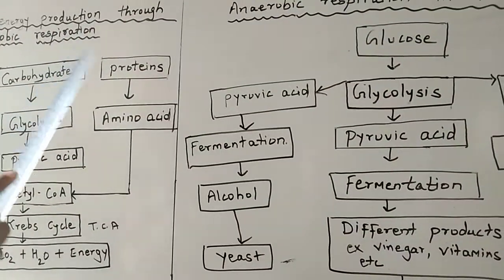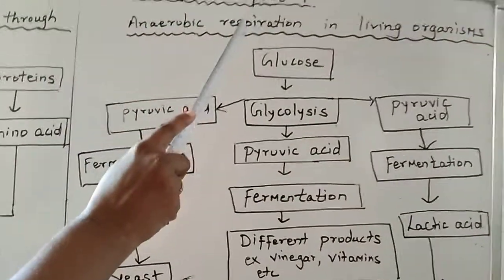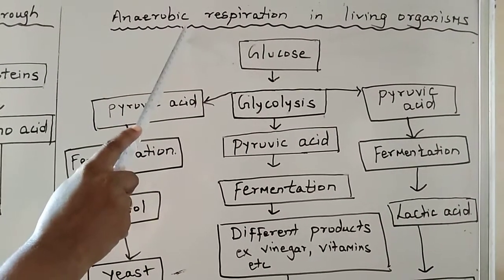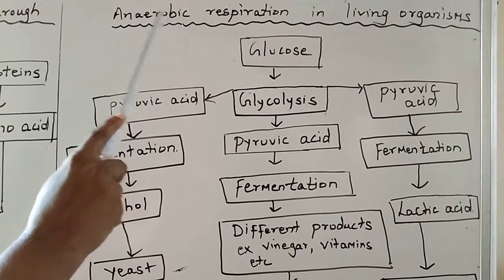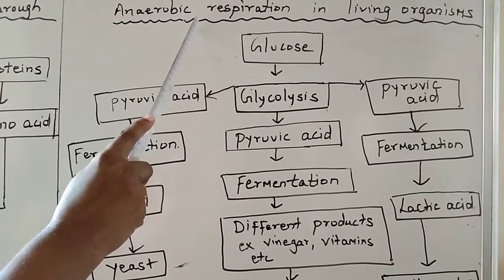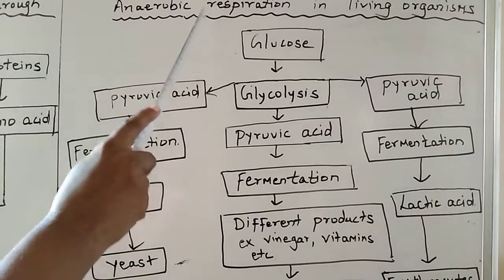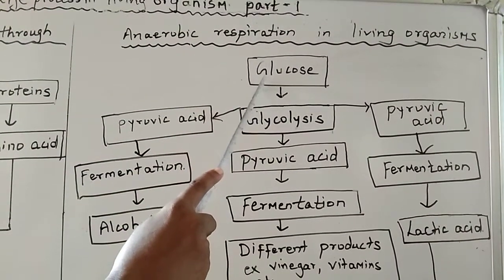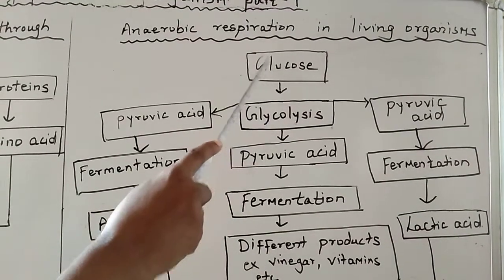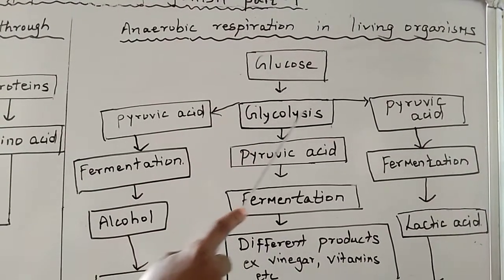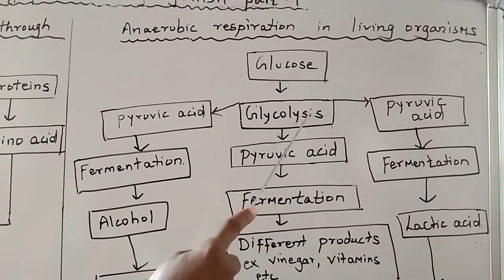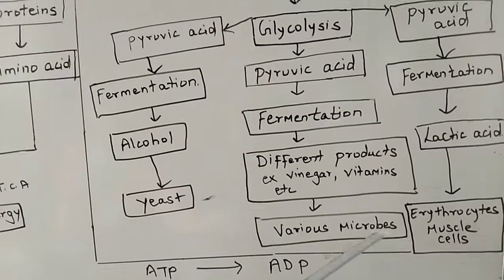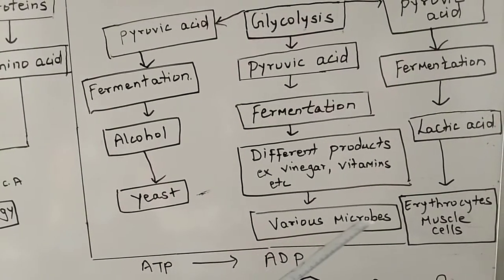Now we will take information about anaerobic respiration in living organisms. Anaerobic means shortage of oxygen, or deficiency of oxygen. Such type of respiration is called anaerobic respiration. Now the glucose molecule gets converted into pyruvic acid by a process called glycolysis, and it undergoes fermentation process with the help of various microbes. Microbes means microorganisms.